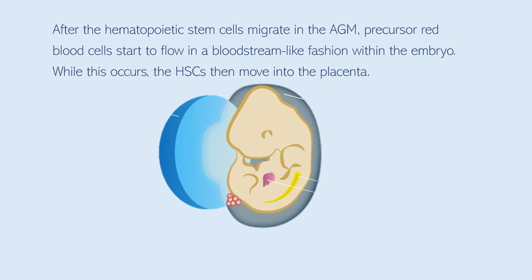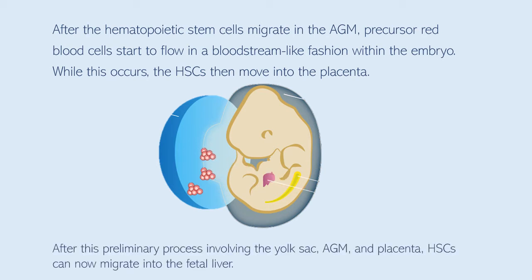After the hematopoietic stem cells migrate into the AGM, precursor red blood cells start to flow in a bloodstream-like manner within the embryo. While this occurs, the hematopoietic stem cells then migrate into the placenta. After this process involving the yolk sac, AGM, and placenta, hematopoietic stem cells can now migrate into the fetal liver.